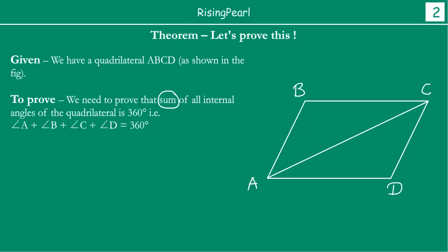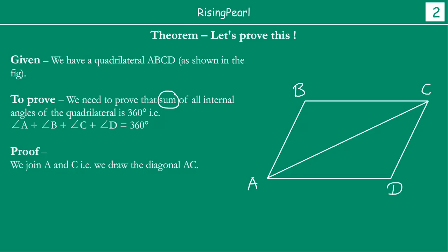So now Dostow, we are going to start the proof and we join one diagonal of the quadrilateral. We have joined point A and C by drawing a straight line between them — this is the diagonal of the quadrilateral. Similarly, BD would have been another diagonal. In this case we have joined AC, but you could have joined BD as well.